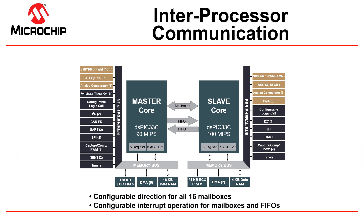There are several ways for the two cores to communicate with each other. Inter-processor communication can be realized using mailboxes and FIFOs. The mailbox and FIFO mechanisms can be polled or interrupt-driven. A write operation to the mailbox can be configured such that the receiving core gets an interrupt, which can be used to indicate that a message is waiting. Similarly, the FIFO can be configured to interrupt when it is full, empty, or various other conditions. This helps implement communication between the master and slave core with very low software overhead.